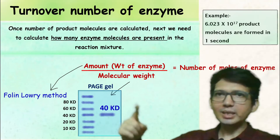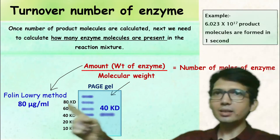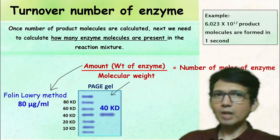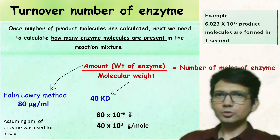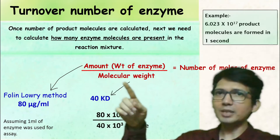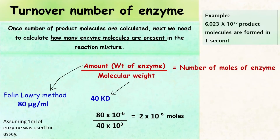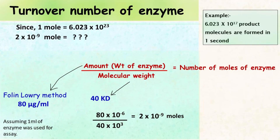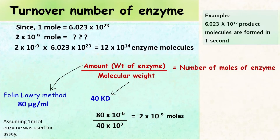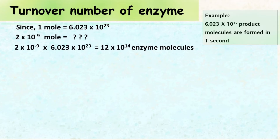Let's say the molecular weight of the enzyme is 40 kilodaltons and the amount of protein estimated by Folin's method is 80 micrograms per mL. Taking the ratio: 80×10⁻⁶ divided by 40×10³ gives 2×10⁻⁹ moles, or 2 nanomoles. Since one mole is 6.023×10²³ molecules, 2 nanomoles equals 12×10¹⁴ enzyme molecules present in our system.